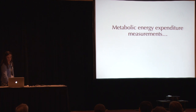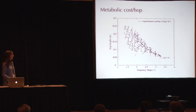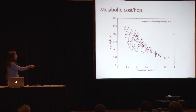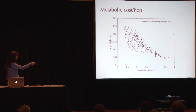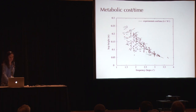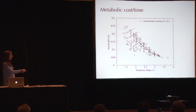Now onto the metabolic energy expenditure measurements. These are graphs showing individual data points on hop height and hop frequency axes, and contour lines like you see on a topographical map. They show that metabolic cost per hop decreases as you get toward higher frequencies and lower hop heights. I'm also going to show a cost per time graph — it'll become apparent why showing different types of metabolic cost is useful.